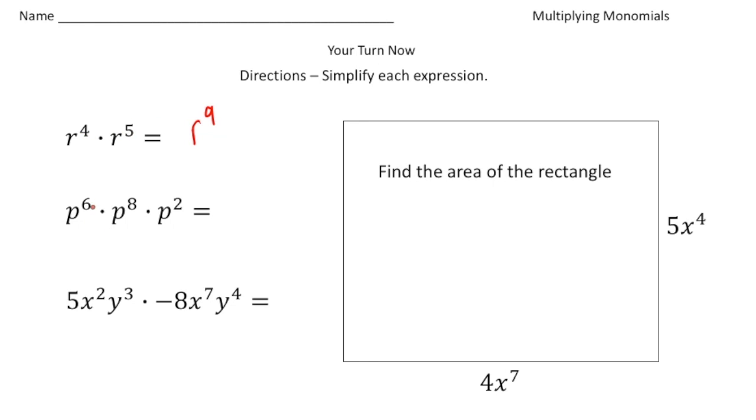Here we have p to the sixth times p to the eighth times p squared, and again all three have the same base of p. So it's going to be p to the two plus eight is ten, plus six is sixteenth power.